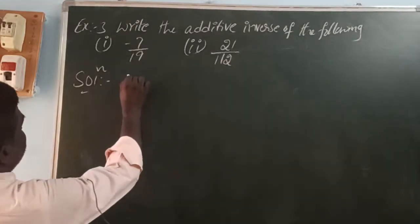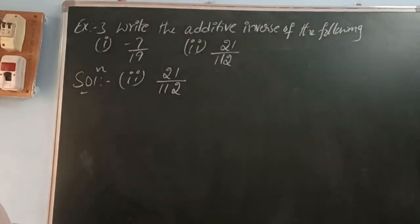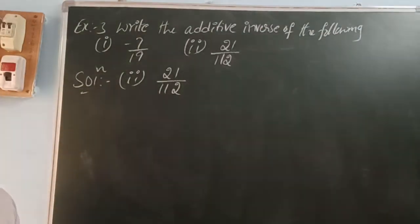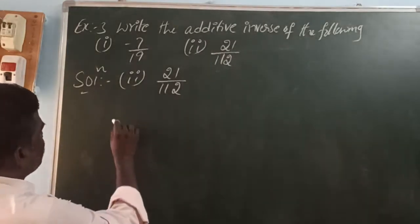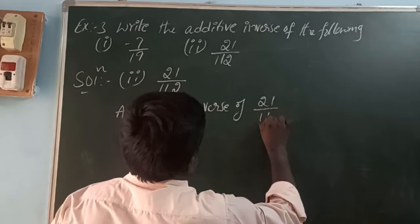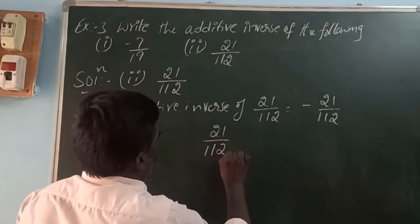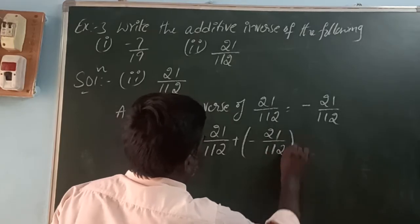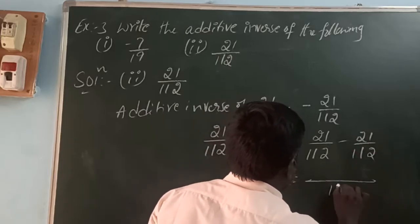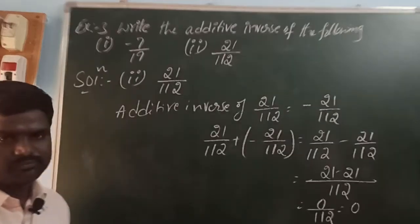Second one: 21/112. For this number, write the additive inverse. Additive inverse means: for a positive number, write negative. So the additive inverse of 21/112 is -21/112. When you add these two: 21/112 + (-21/112) = (21 - 21)/112 = 0/112 = 0.